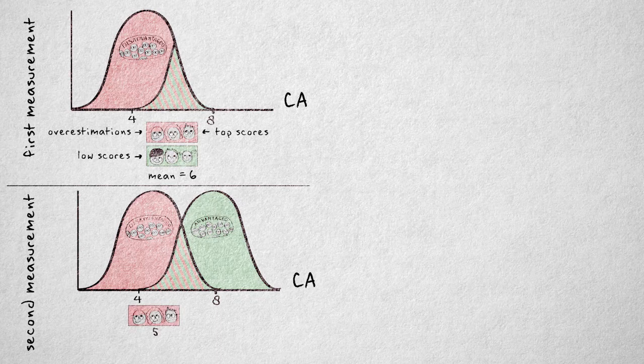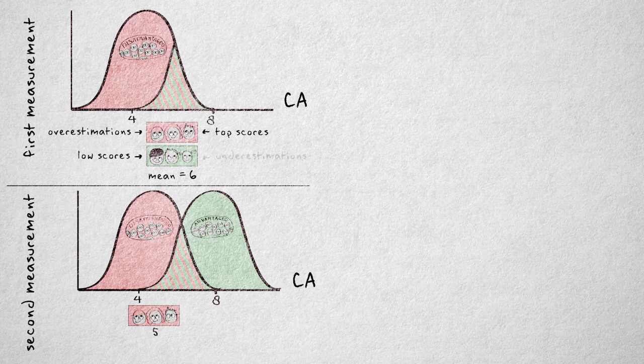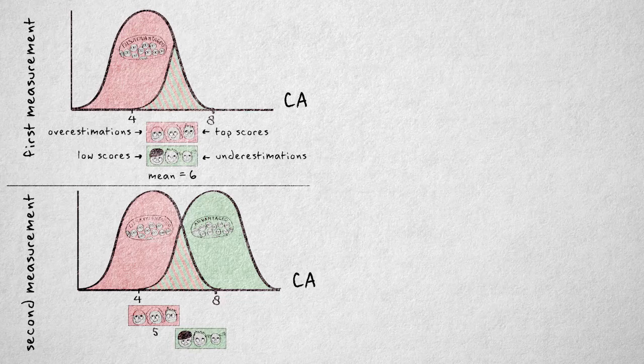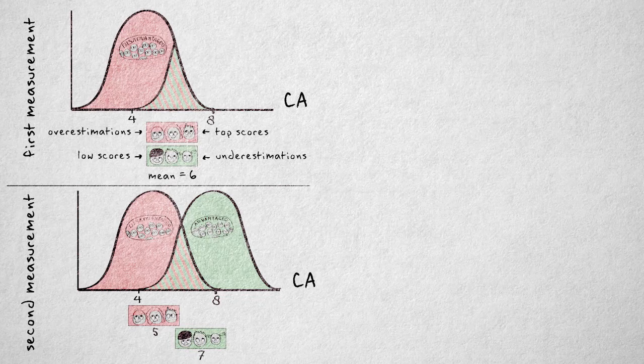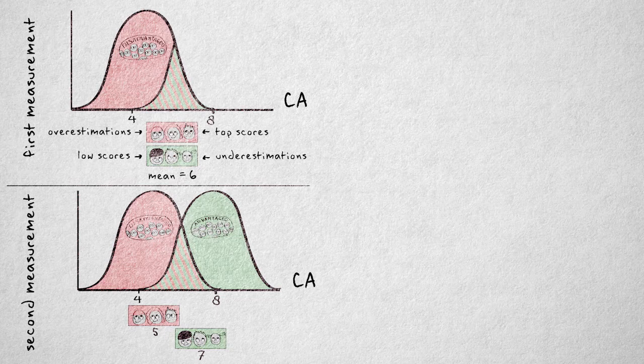In the advantaged selection, it's likely that at least some of these relatively low scores are underestimations, and a second measurement will be closer to the mean of the advantaged children, resulting in a higher mean score for this selection. So, without any intervention, we would already expect a difference between these groups on the post-test, based on just the regression to the mean effect.